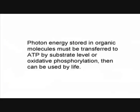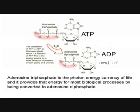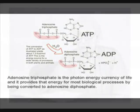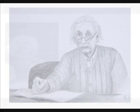Photon energy stored in organic molecules must be transferred to ATP by substrate-level or oxidative phosphorylation, then can be used by life. Adenosine triphosphate is the photon energy currency of life, and it provides that energy for most biological processes by being converted to adenosine diphosphate.